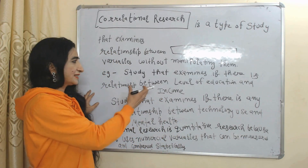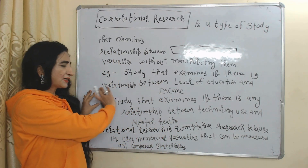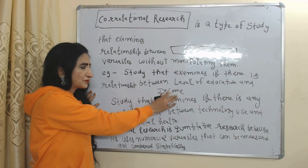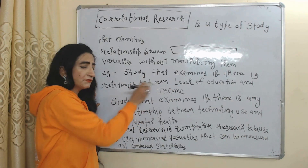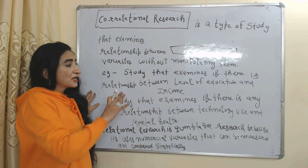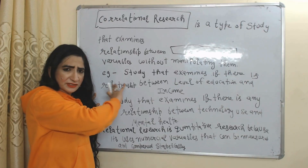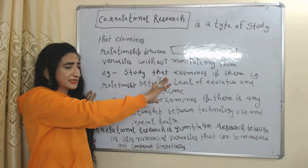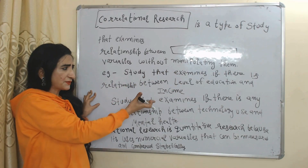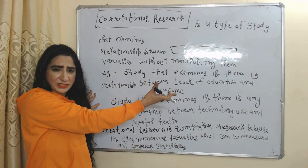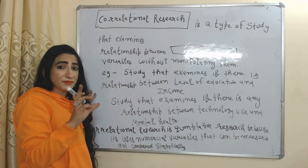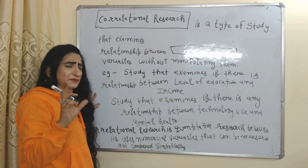For example, a study that examines whether there is any relationship between level of education and income would be called correlational research. Correlational research will just examine the relationship between education and income but will not manipulate either variable.